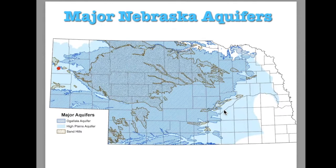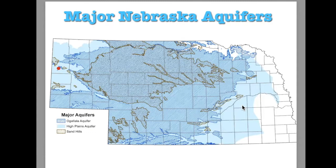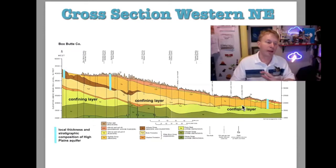These are the major Nebraska aquifers. There are really only two to talk about: the brownish area is the Sandhills, the lighter blue area is the High Plains Aquifer, and the striped area is the Ogallala Aquifer. Lancaster County doesn't really have a named aquifer underneath it — it does have a water table. I'm not sure if that's because the soil types are different here and don't allow water to flow easily.